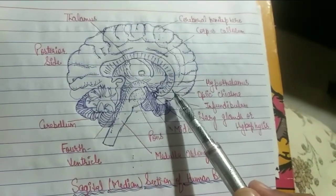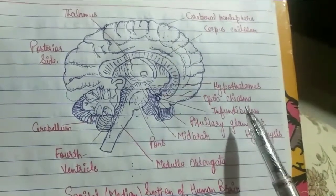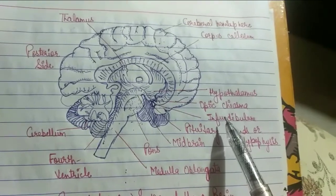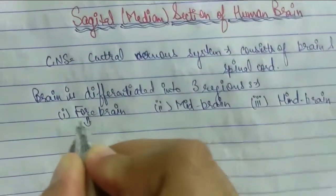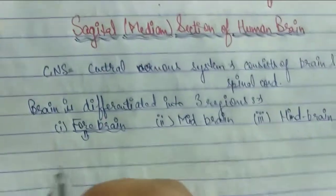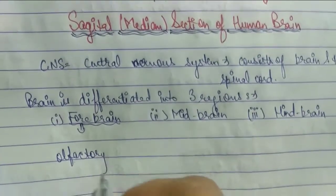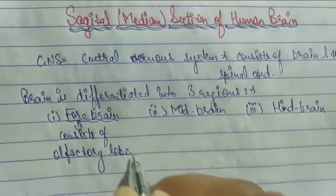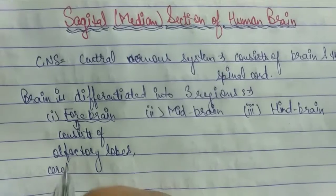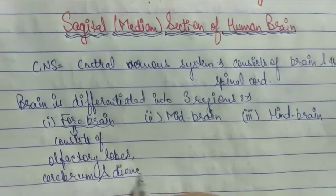The forebrain consists of the olfactory lobes, the cerebrum, and the diencephalon.